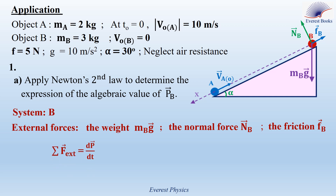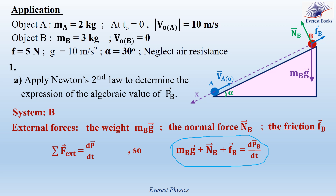Let's apply the general expression of Newton's second law: the sum of external forces equals dP/dt. This gives MbG plus Nb plus Fb equals dPb/dt. We project all vectors along the x-axis, which extends positively downward along the incline as shown in the figure. MbG gives you MbG sine alpha in the positive x direction, so we have plus MbG sine alpha.